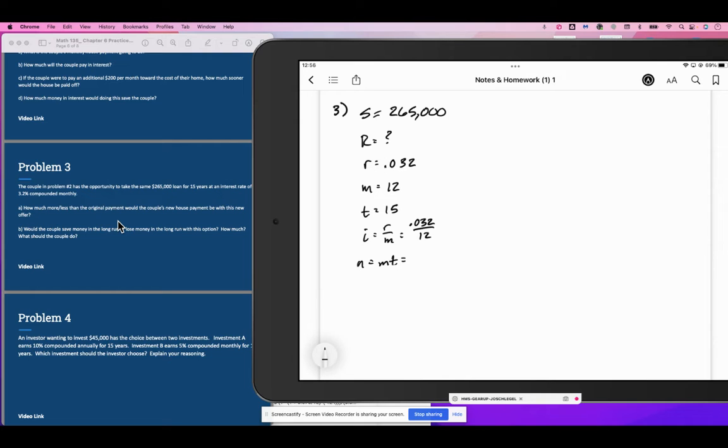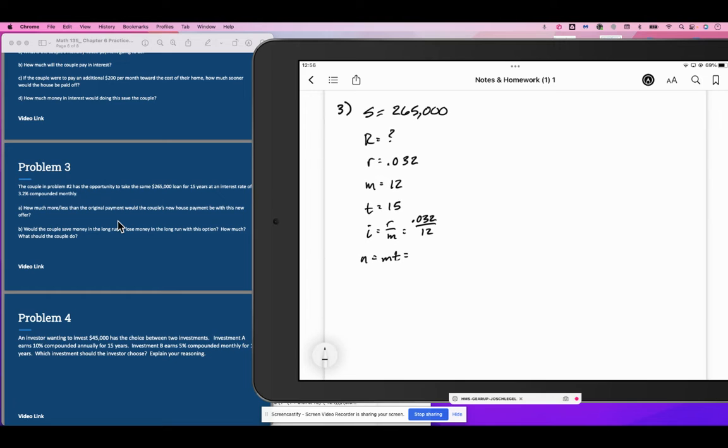So 0.032 over 12. That doesn't come out even. 12 times 15 is 180. This is going to be present value of an annuity because we are paying this down. So 1 minus 1 plus i to the negative n over i.